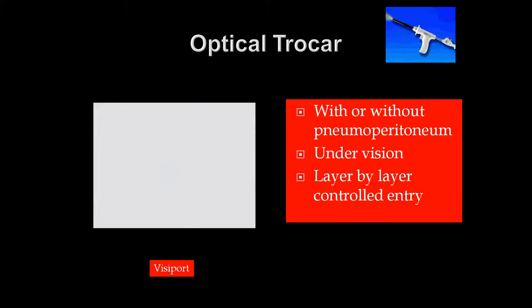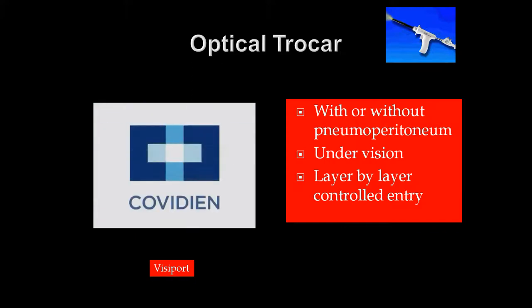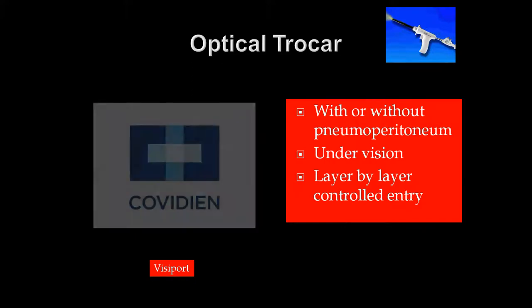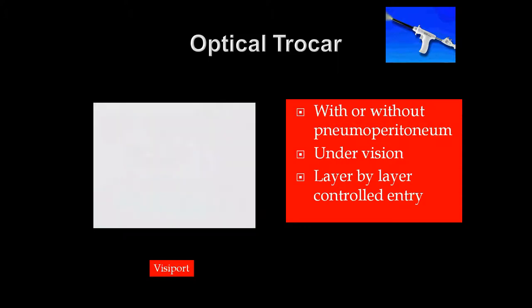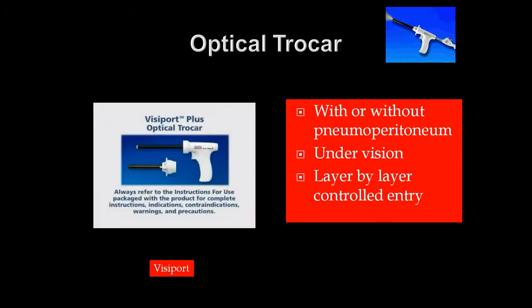With the optical trocar, we are able to enter the peritoneal cavity under vision layer by layer in a controlled way — going through the subcutaneous tissue, linea alba, preperitoneal fat, and peritoneal layer. Layer by layer, using the optical port, we can make a safe entry into the peritoneal cavity.